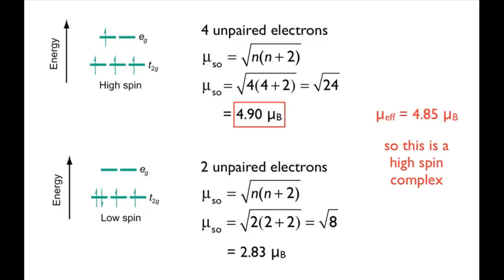The experimental value 4.85 Bohr magnetons is very close to the high-spin value, telling us that this chromium complex is a high-spin complex.